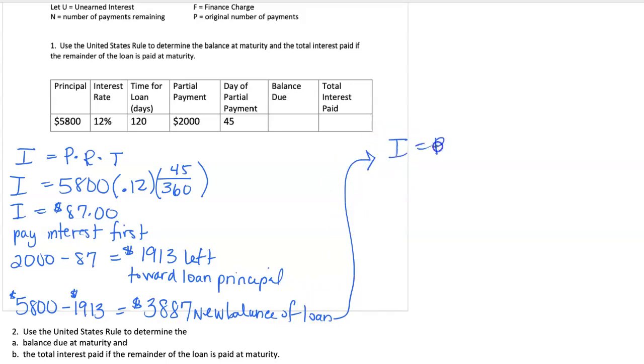We're going to find I equals PRT and in this case our P, the principal of our loan, is this new $3,887. Our interest rate is still 12% and now we have to figure out how much time is left out of our 360.